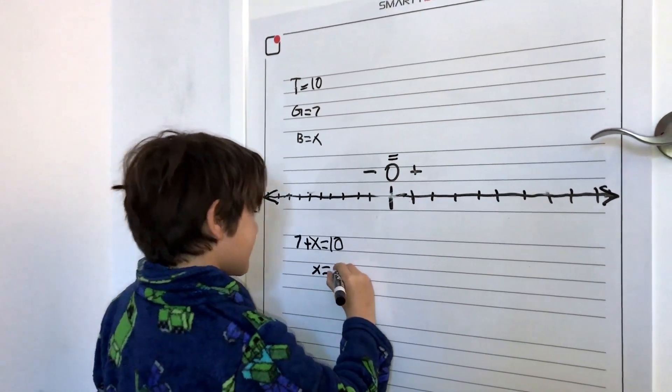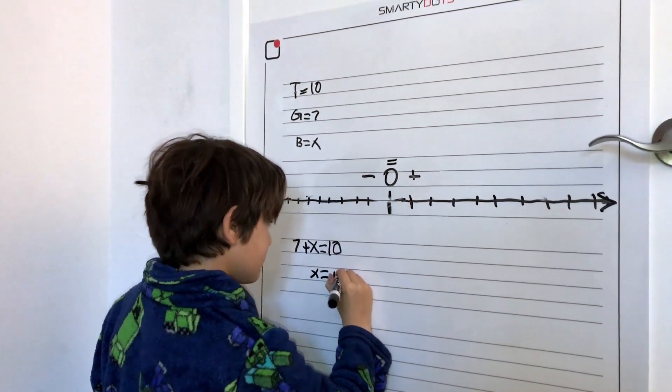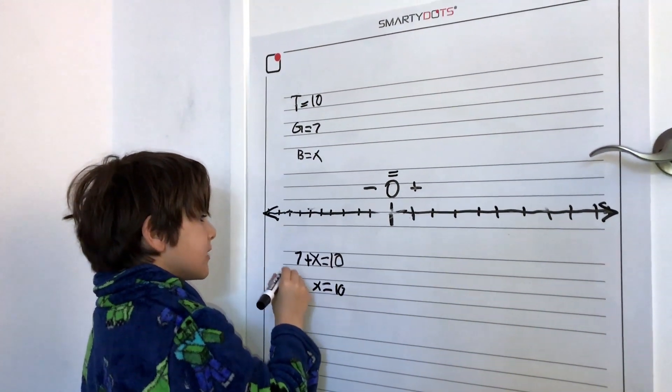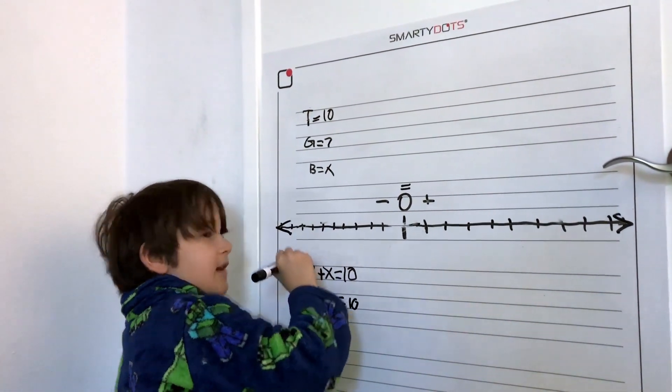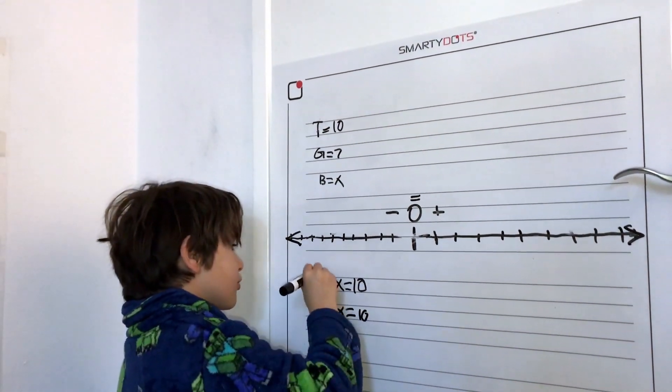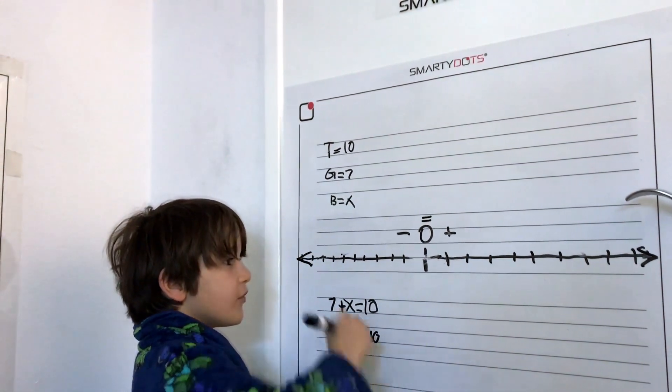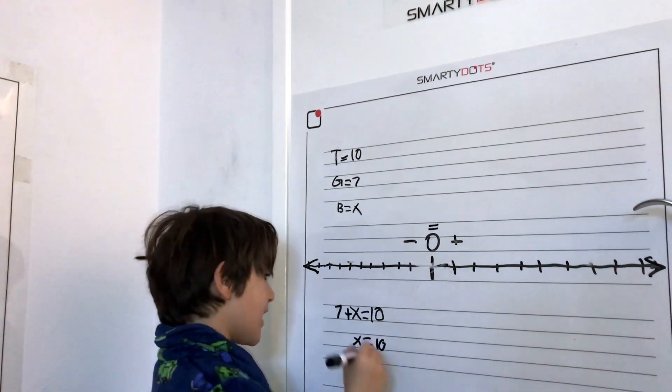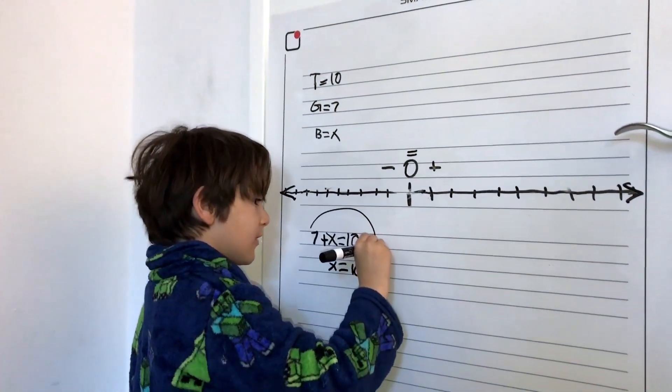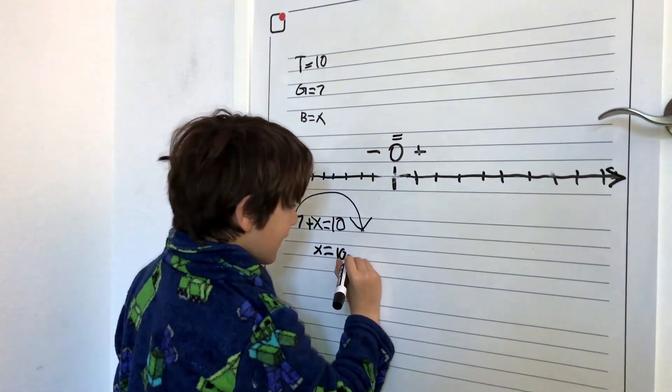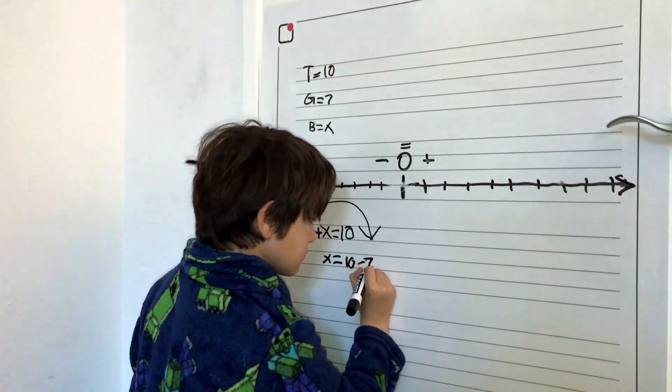Yeah. So then ten stays here. But seven is, seven has to move somewhere else. Somewhere else is where? It has to move to... On the other side. On the other side. So we're going to move it here. And then it becomes a minus.